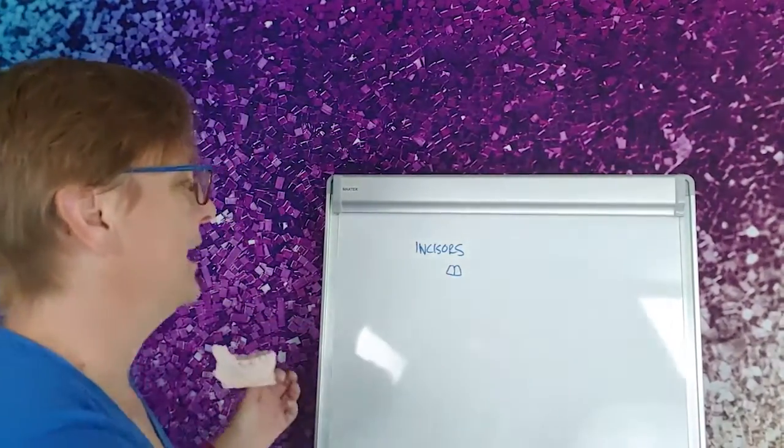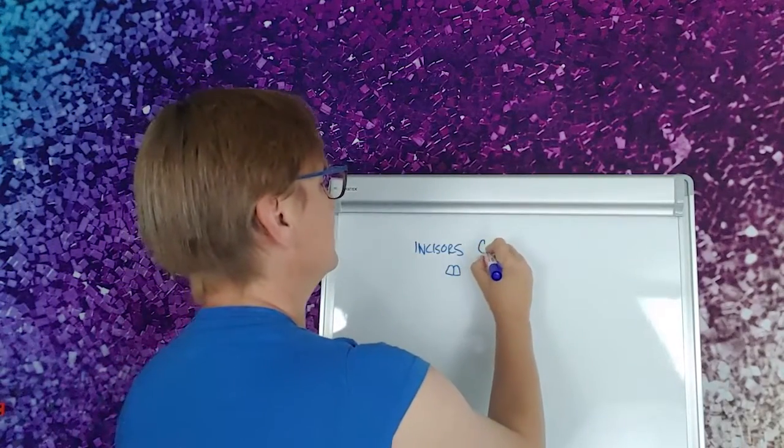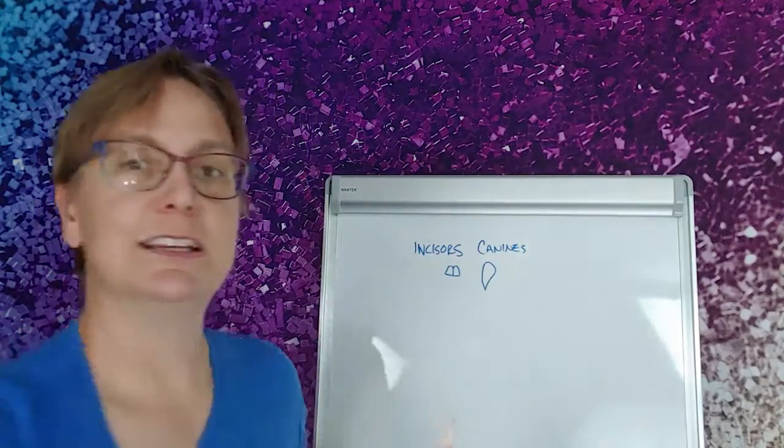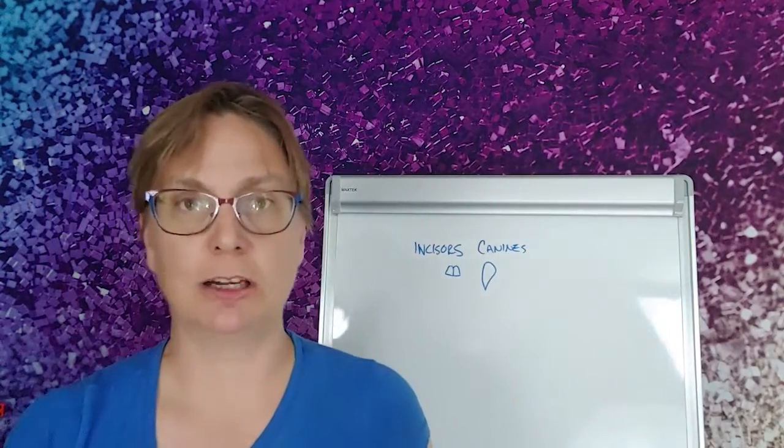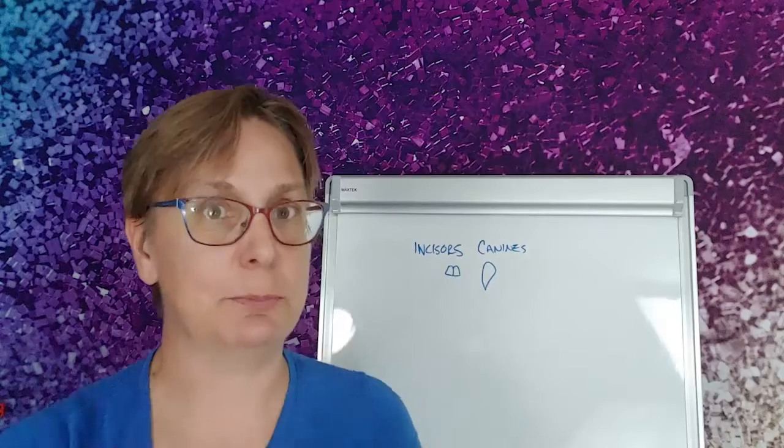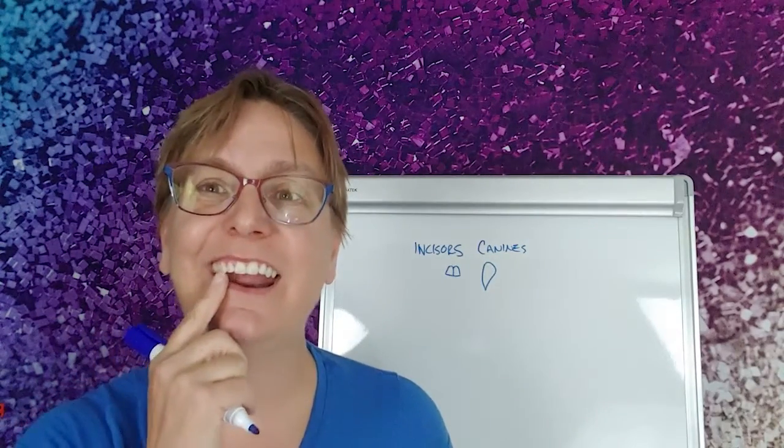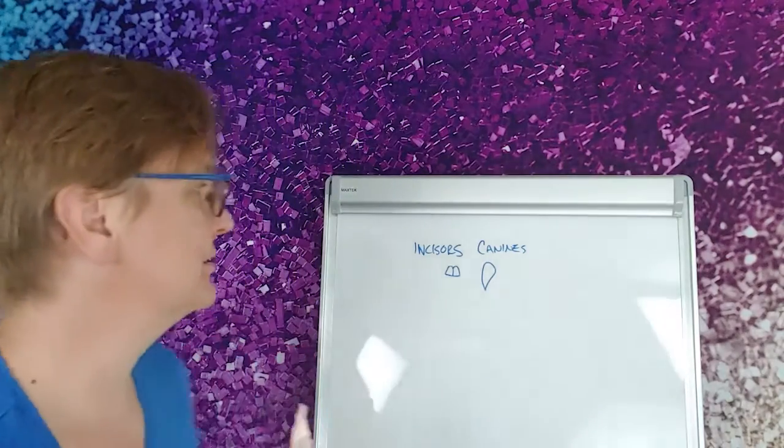The next set of teeth we have are the canines. These are the pointy ones. These are the ones that we associate with dogs and saber-toothed tigers and even baboons. We have canines, we call them our eye teeth. They are just behind our incisors.